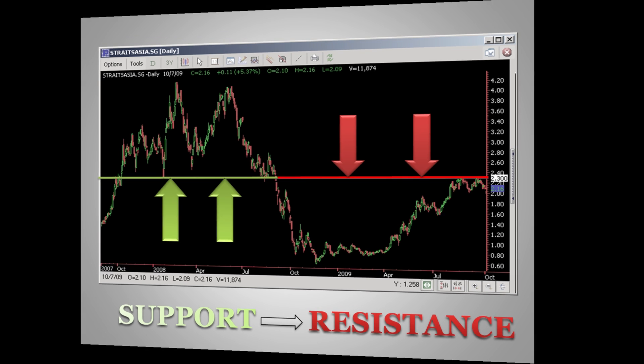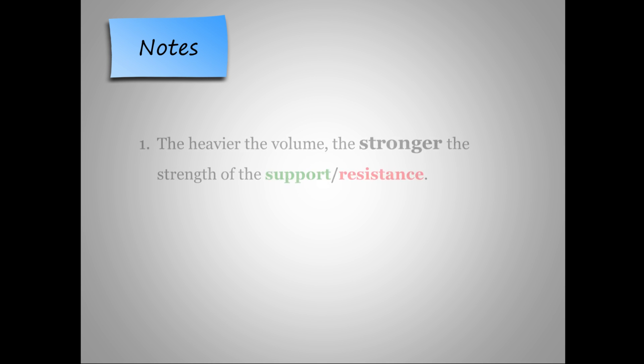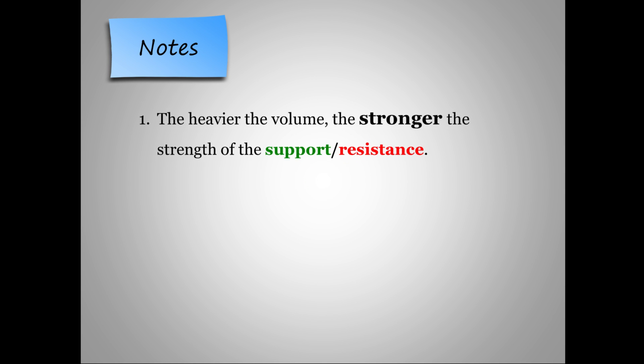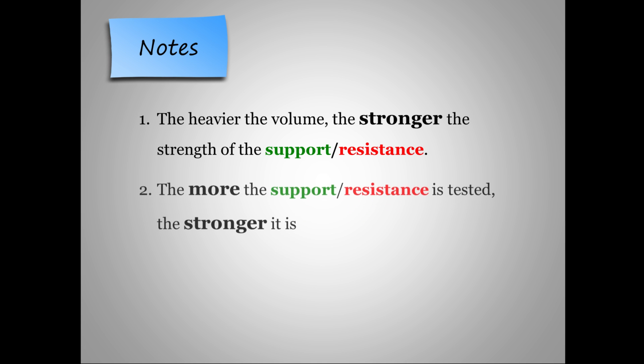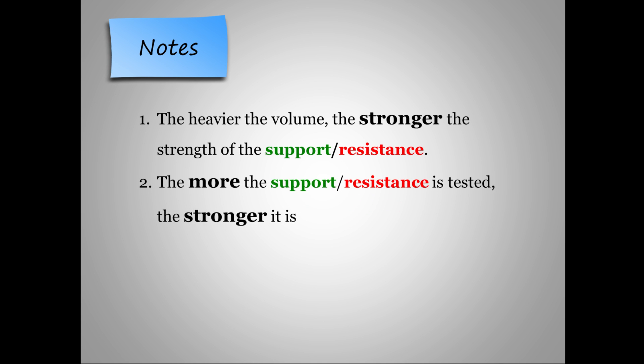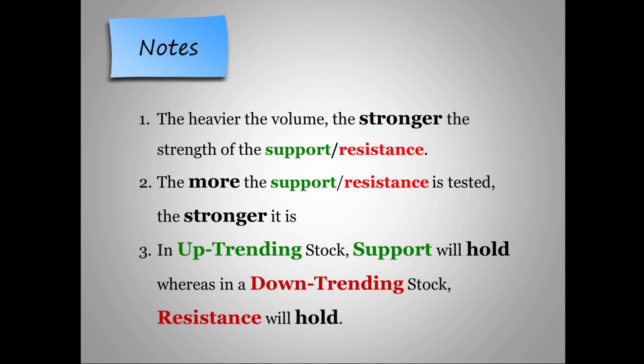Here are some key notes on support and resistance. The heavier the volume, the stronger the strength of the support or resistance. The more the support or resistance is tested, the stronger it is. In an uptrending stock, support will hold, whereas in a downtrending stock, resistance will hold.